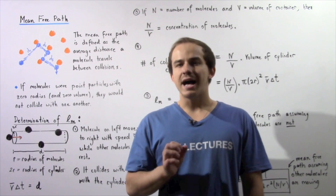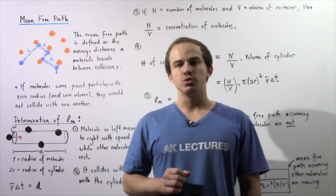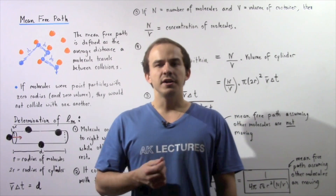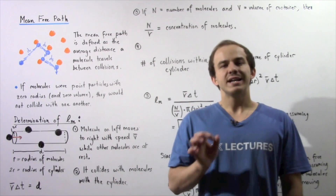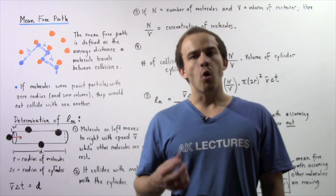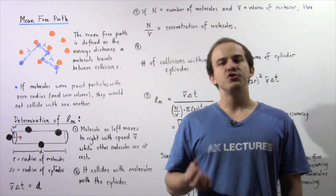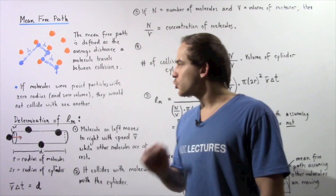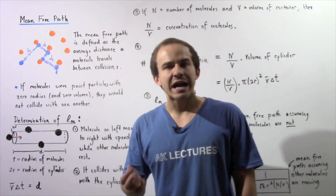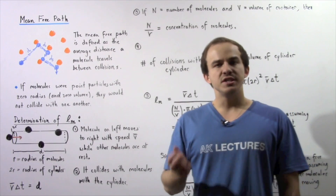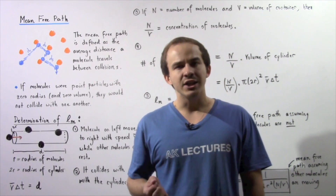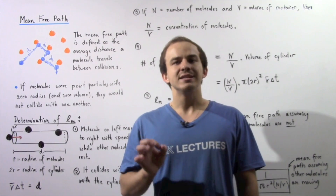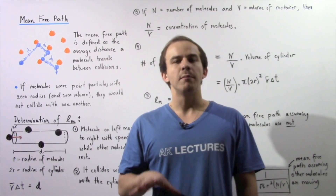Because of the very small sizes of atoms and molecules compared to large macroscopic objects, it is very common to assume that atoms and molecules are point particles that have no volume and no radius. Now if this was actually true — if molecules were in fact point particles with zero radius and zero volume — then that would imply that collisions do not take place on the subatomic level.